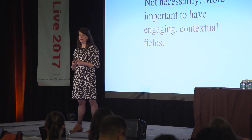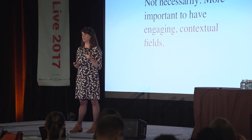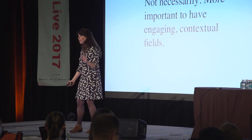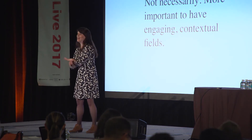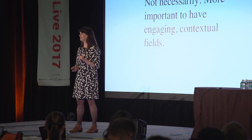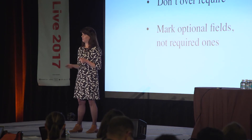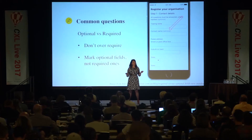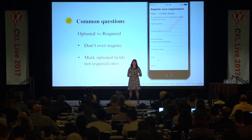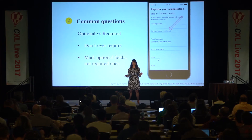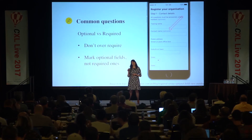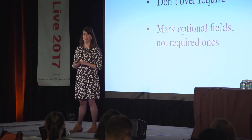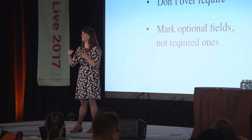I want to cover a couple of common questions I often get. People say, 'Julie, the shorter the better, right?' I say no, not necessarily. It's actually way more important to have engaging contextual fields than any rule about global length being shorter or longer. On optional versus required: don't over-require, because once again, that's not human. And we want to mark optional fields, not required ones. This is less visually distracting, more friendly, and better for accessibility. We cannot assume that an asterisk is going to be understood as required for all users.